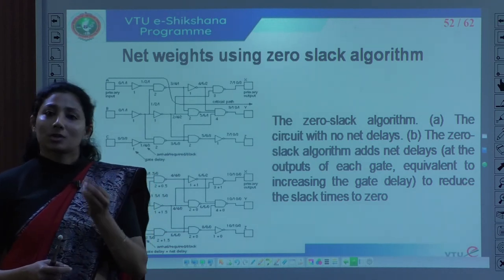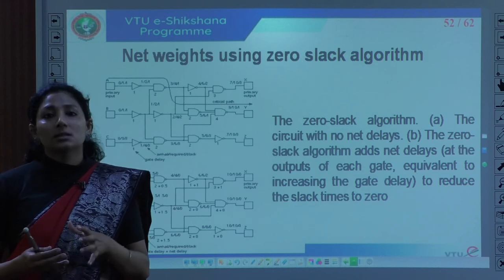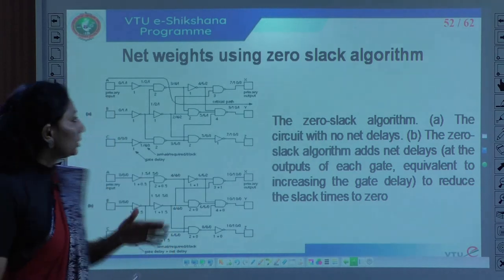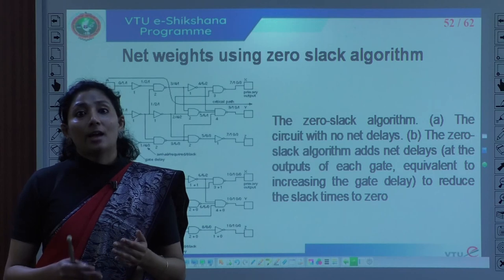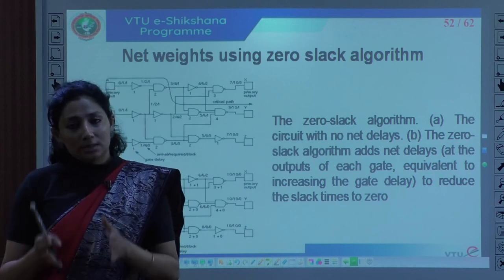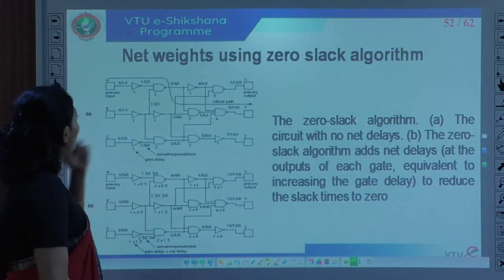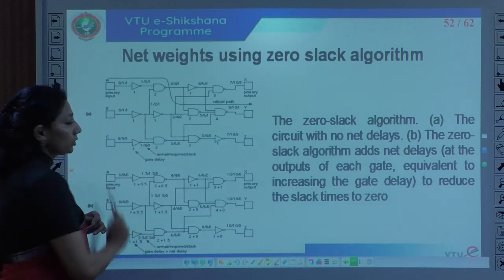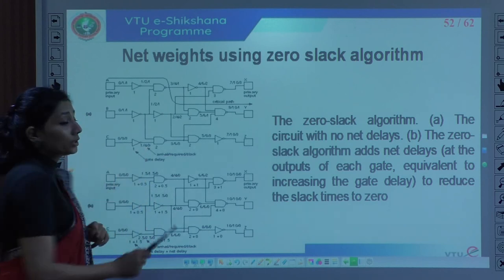I have to make the slack 0 — I either add delay or optimize the delay so the slack becomes 0. In this particular example, only positive slacks are given; there is no minus value, meaning the signal always arrives early and I have to delay it. For instance, arrival time is 1 nanosecond but required is 4 nanoseconds — a difference of 3 nanoseconds of slack.